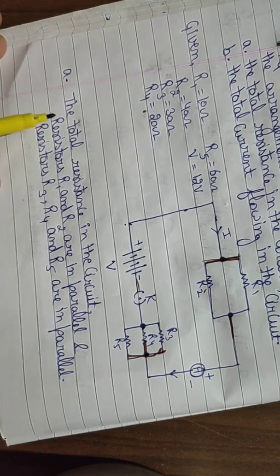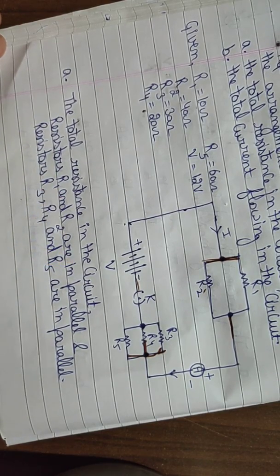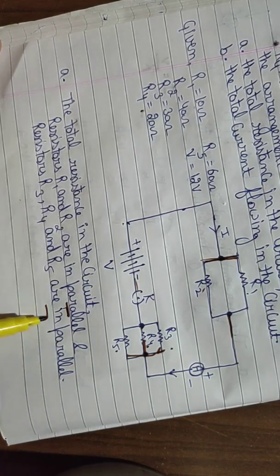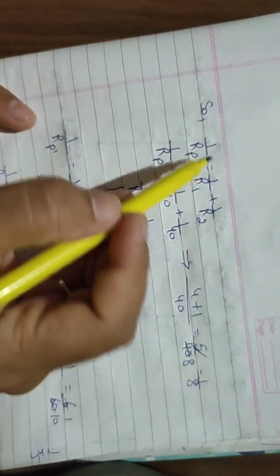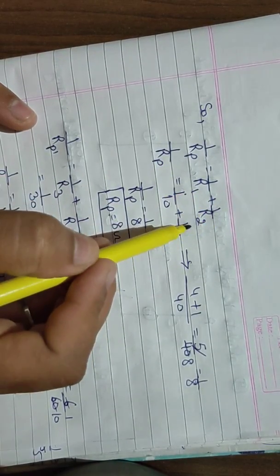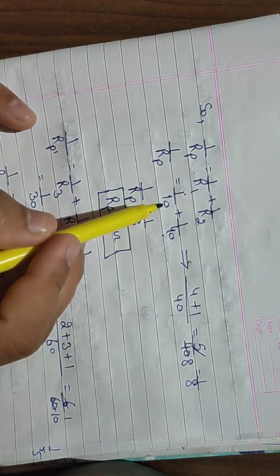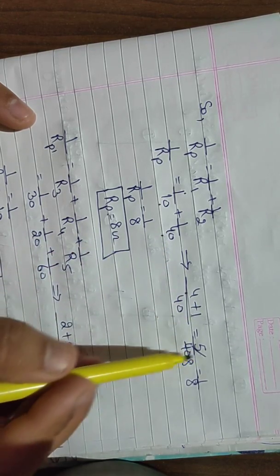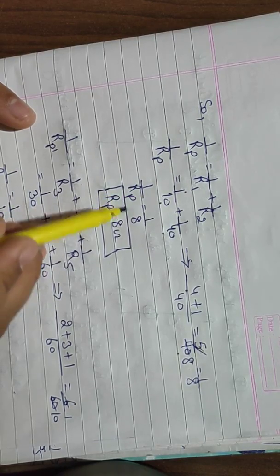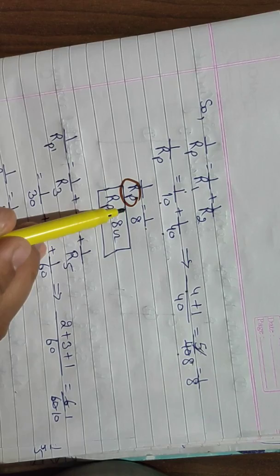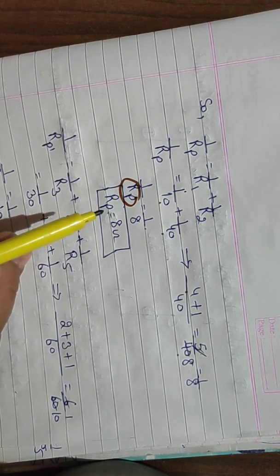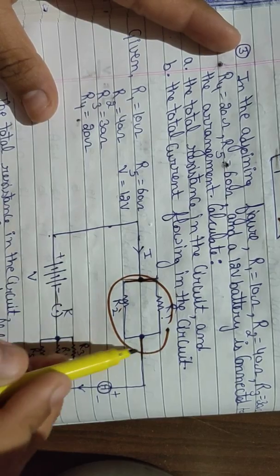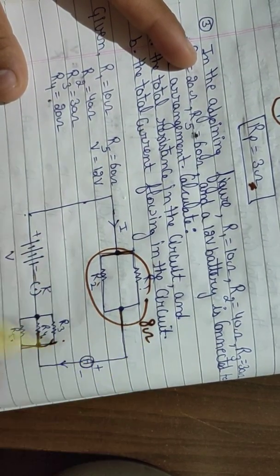For Part A — total resistance. R1 and R2 are in parallel: 1/Rp = 1/R1 + 1/R2 = 1/10 + 1/40. LCM of 40: = 4/40 + 1/40 = 5/40 = 1/8. So Rp = 8 ohm. When these two resistors are solved, we get one equivalent resistor of 8 ohm.